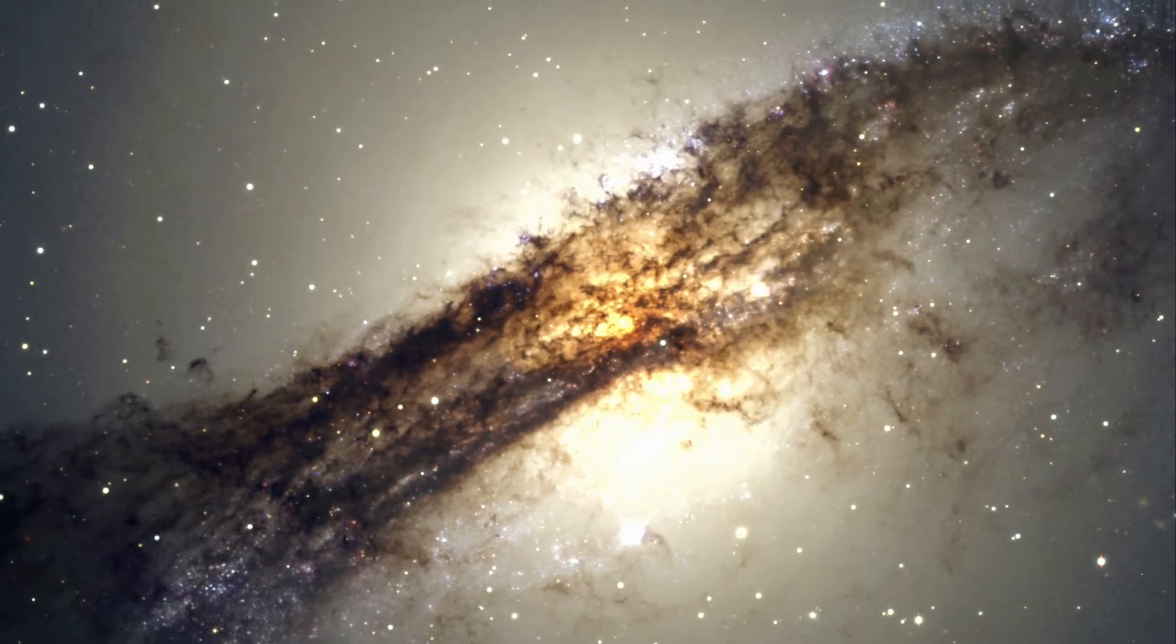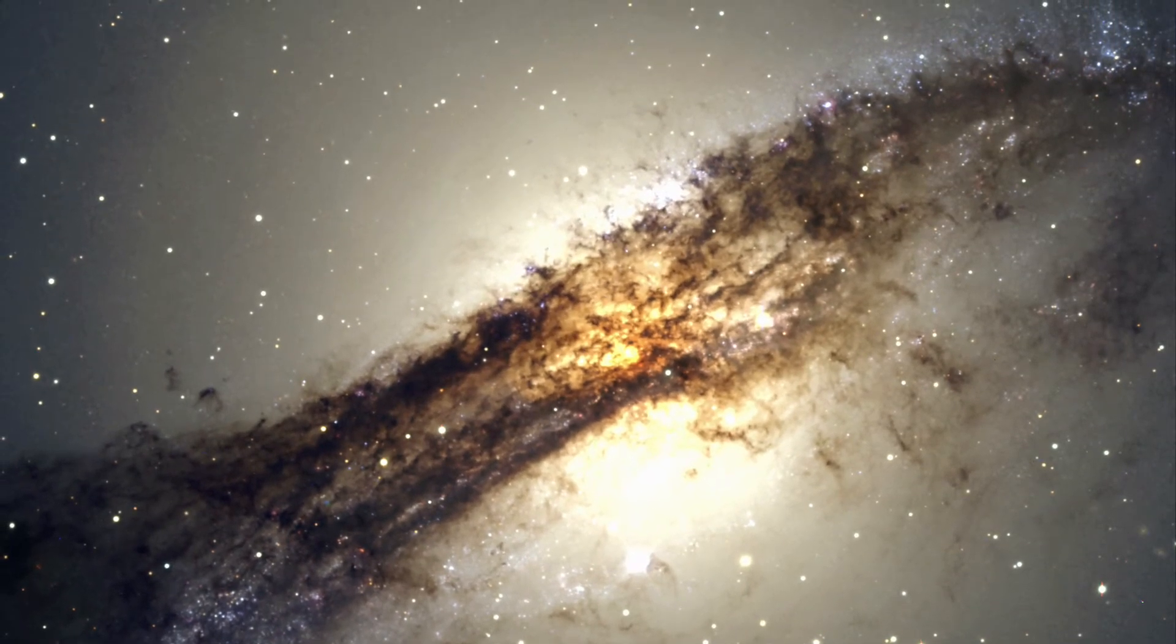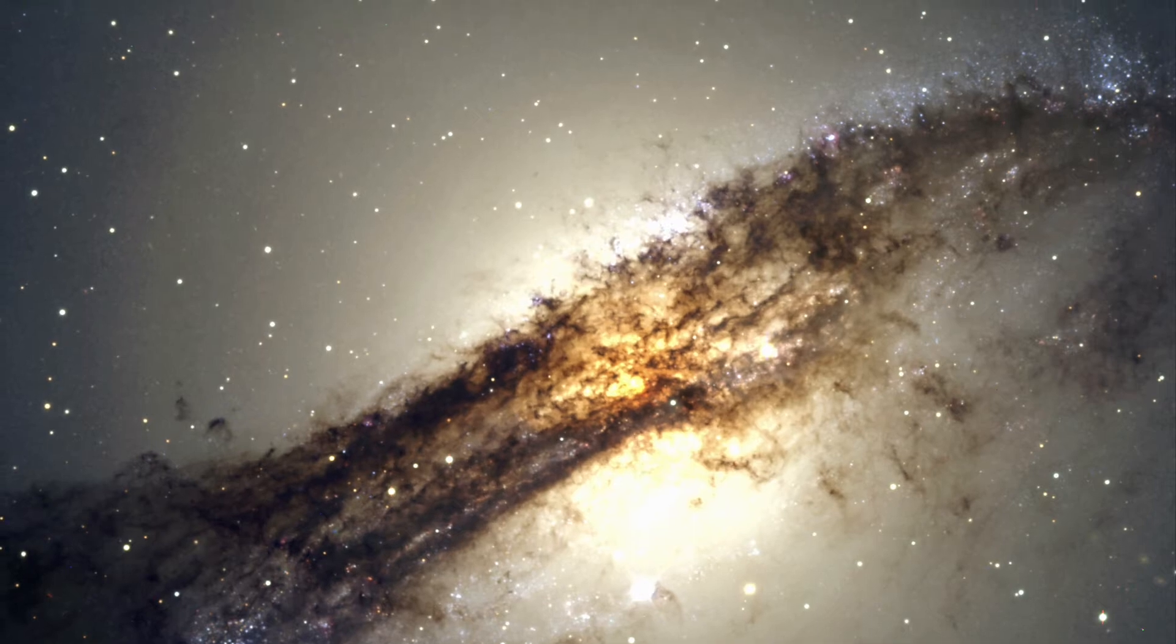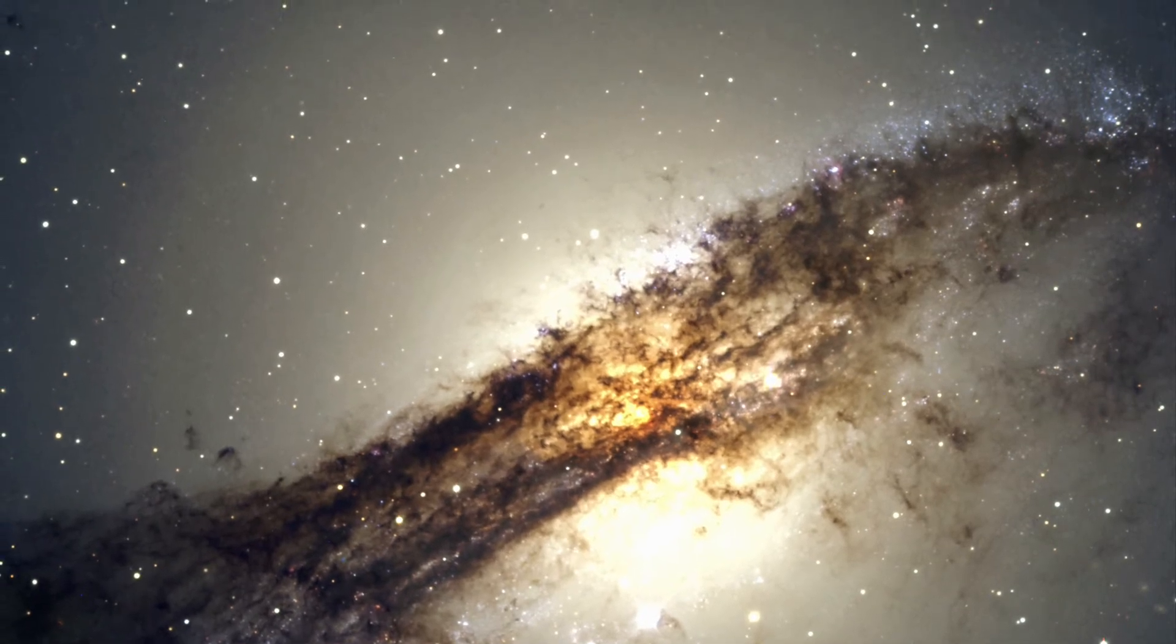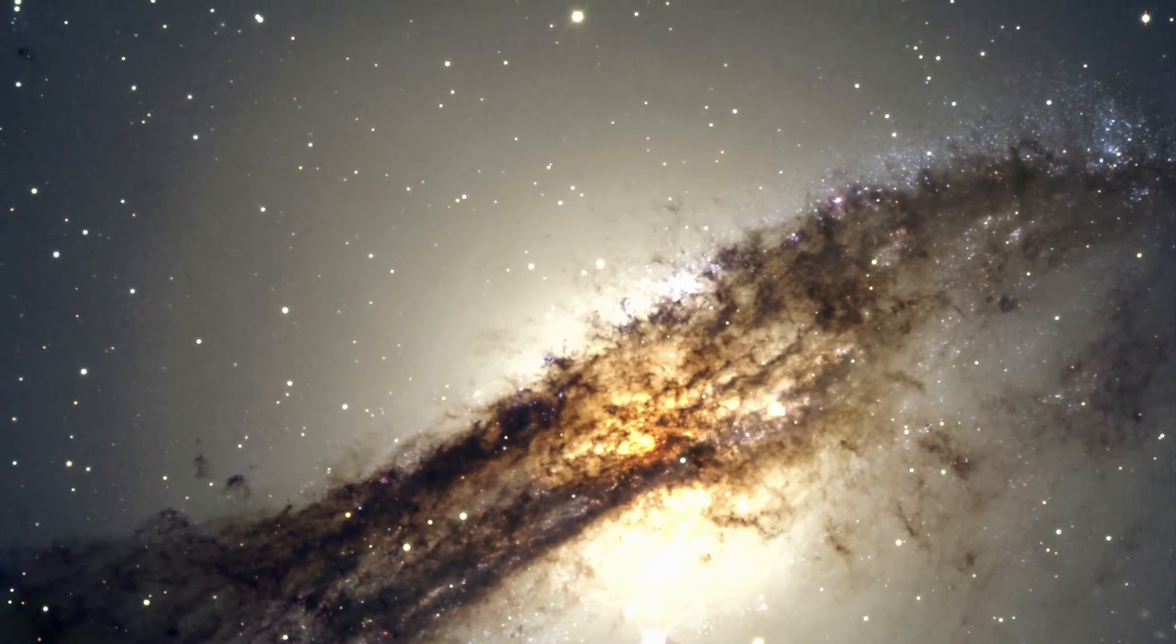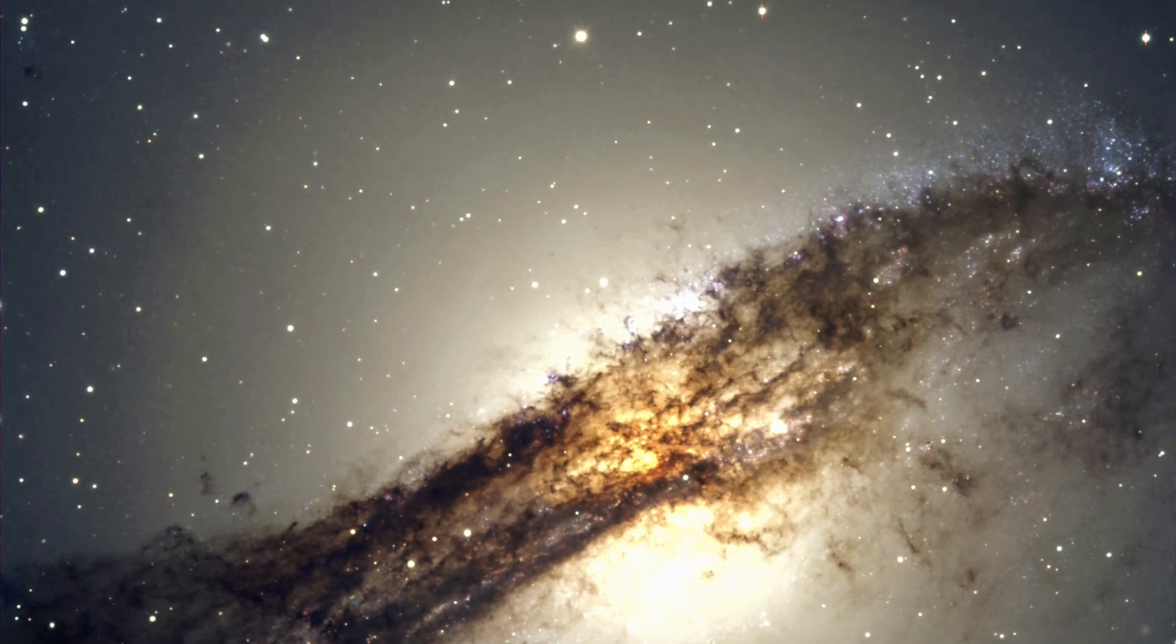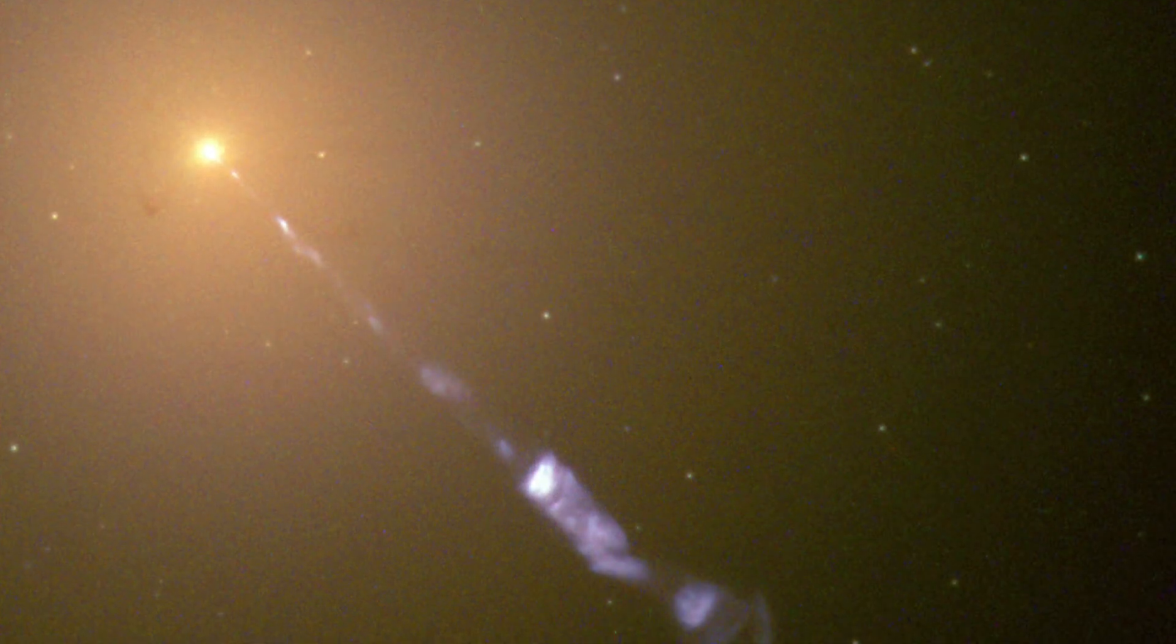So how are black holes made? Well scientists think that black holes are created in places where matter is extremely dense. This is basically a huge amount of material that is crammed into an extremely small space.